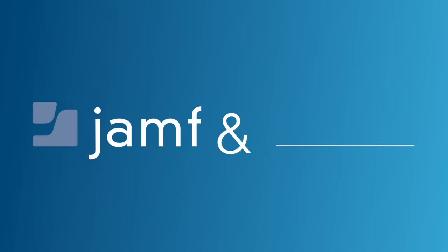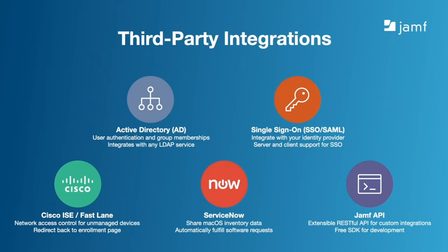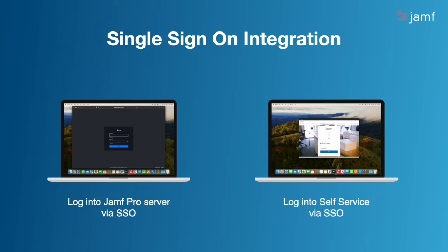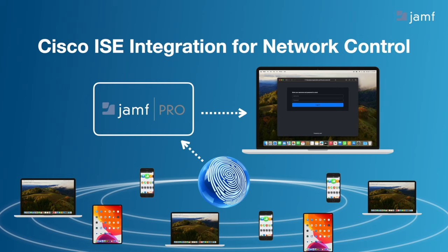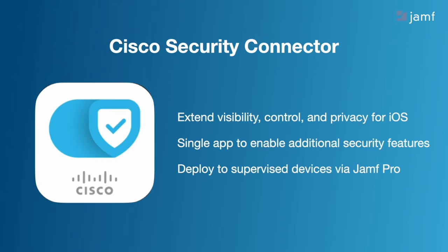Jamf isn't the only software in your environment. We embrace the philosophy of 'Jamf and,' making sure we work with whatever other tools you need to get your job done. We integrate with third-party infrastructure such as Active Directory, single sign-on providers, Cisco, and ServiceNow, and we have our own API to build your own tools and connections. You can use any single sign-on provider that uses Security Assertion Markup Language, or SAML, to log into your Jamf Pro server and provide access to the Self Service app. If you're using Cisco, you can leverage Fastlane, which allows you to optimize the performance of mission-critical apps on your network — for example, giving WebEx the highest priority so an important meeting doesn't have bandwidth issues. You can also integrate with Cisco ISE for network control, having ISE look for unmanaged devices on the network and redirect them back to the enrollment screen. And if you're using a Cisco security connector, you can deploy that to your supervised iOS devices to take advantage of those umbrella features.